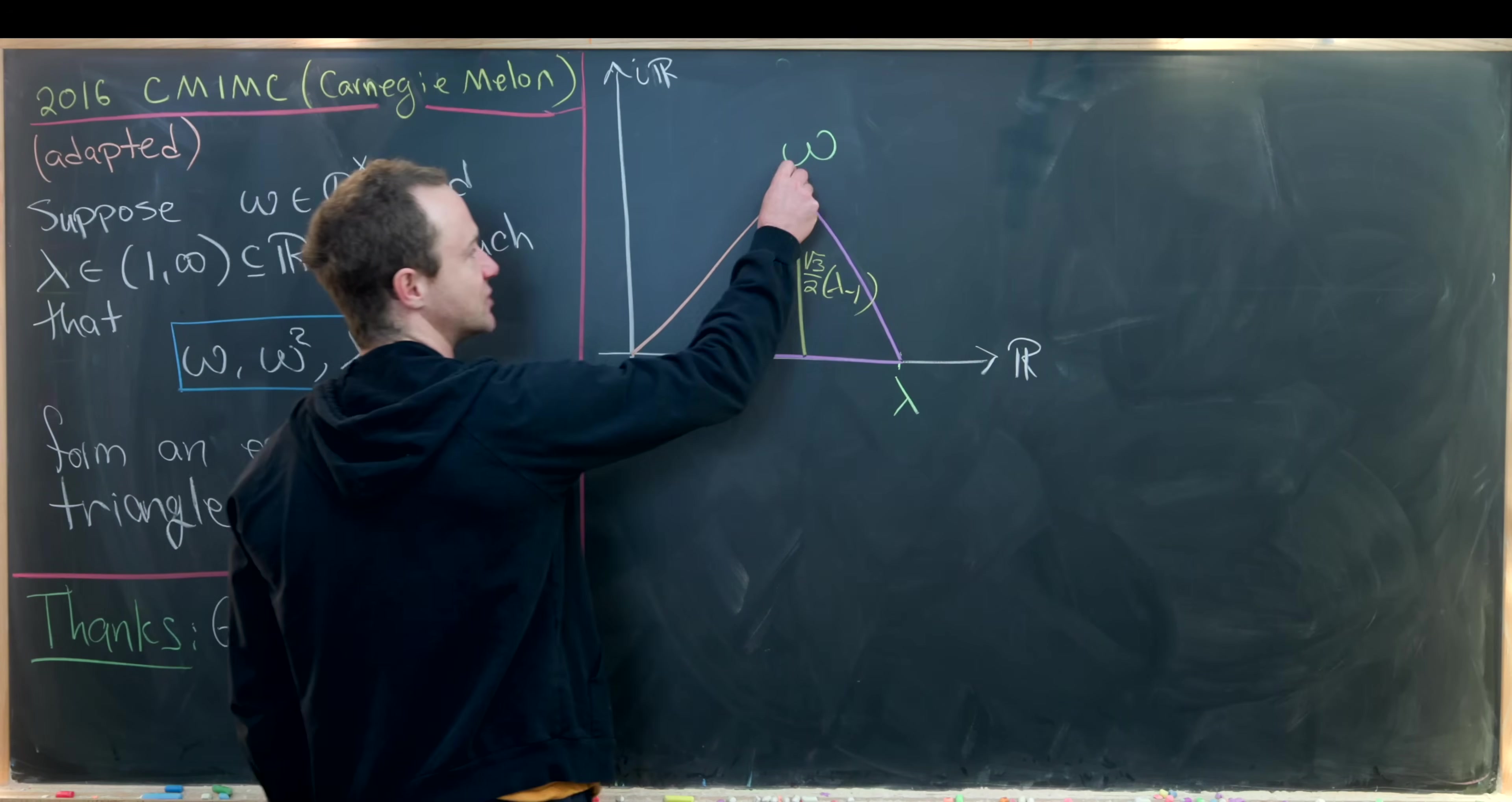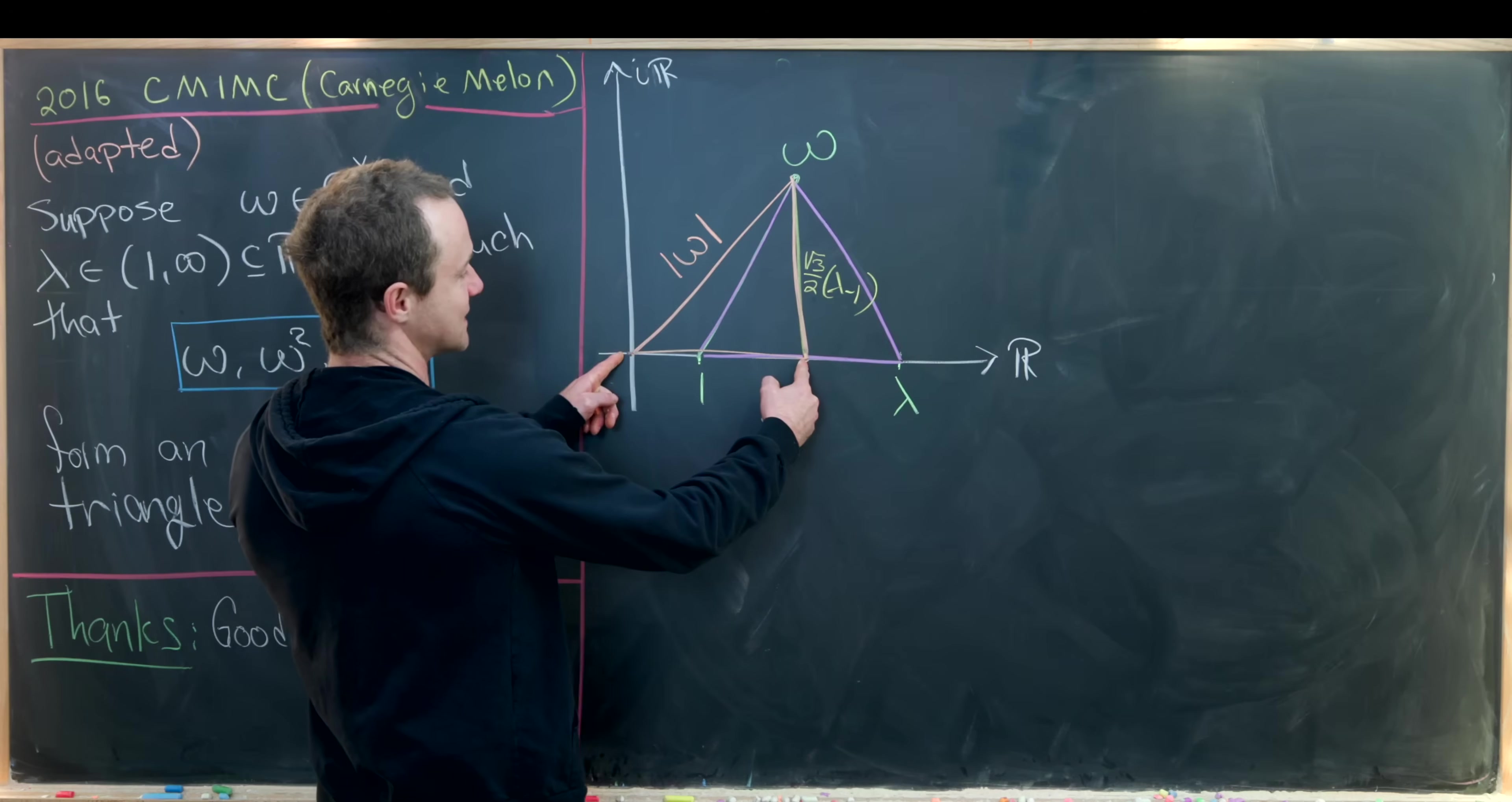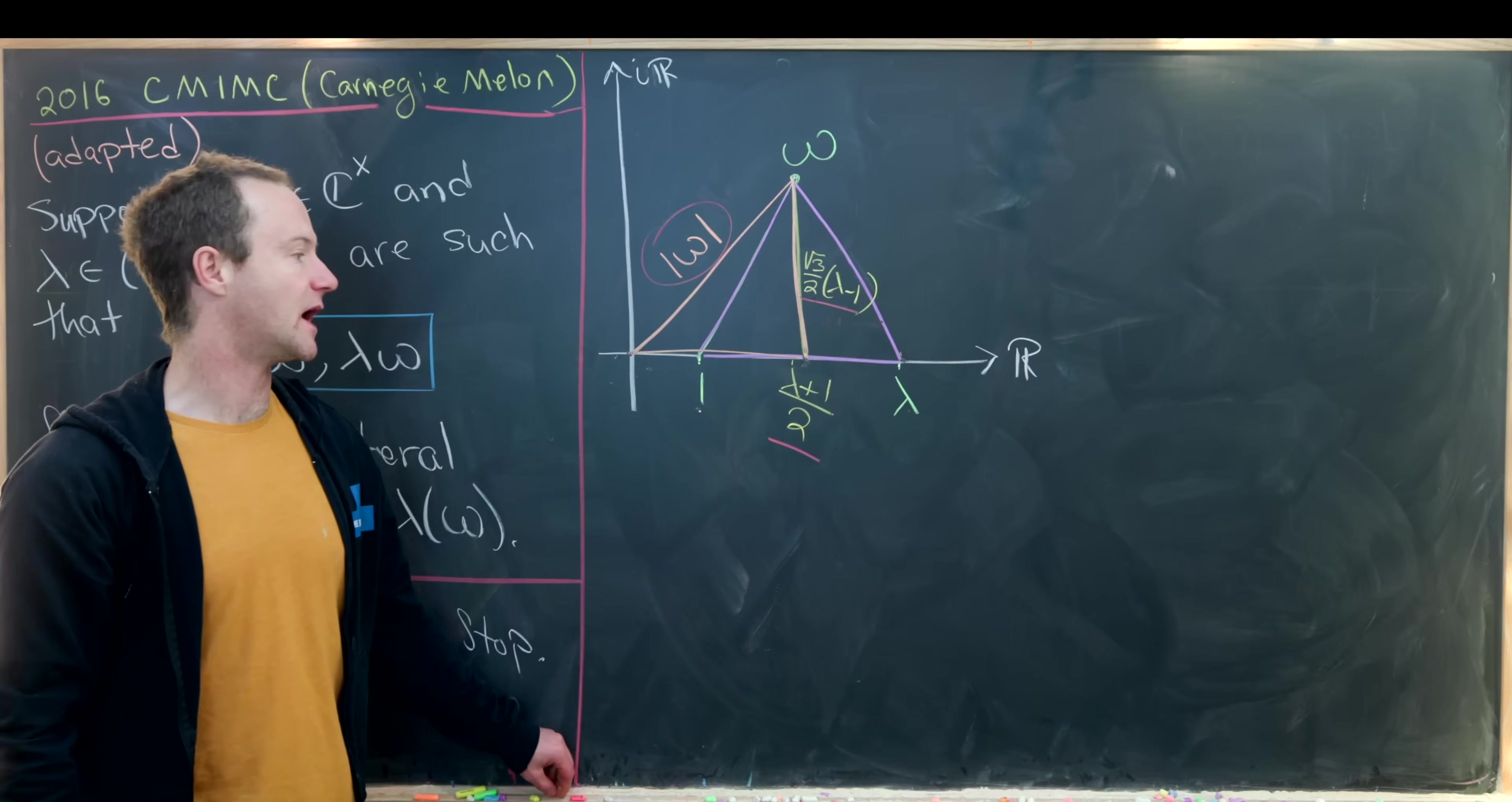So the triangle will be in this peach color. So I'll draw it like this. So notice the hypotenuse has distance omega or measure omega. And then here, this height is the square root of 3 over 2 times lambda minus 1. And then we can figure out this distance as well, which is not too hard. And then this point right here will be the average of lambda and 1. So that'll be lambda plus 1 over 2.